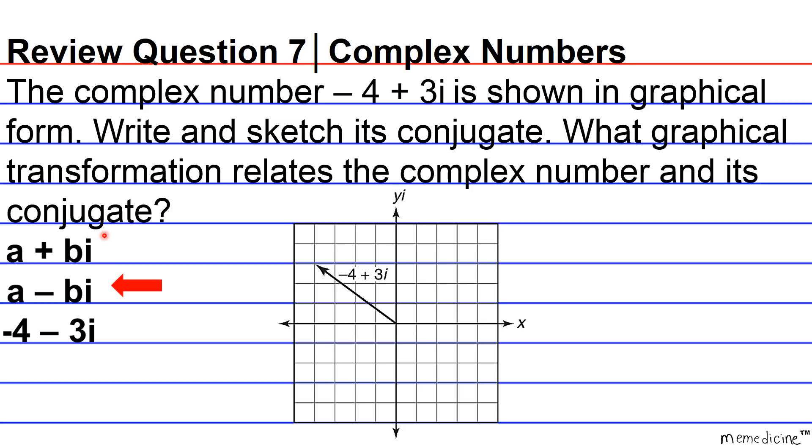All right, so the graph of its conjugate is going to be negative 4, 1, 2, 3, 4 minus 3i. So we have 1i down, 2i down, 3i down, so the graph should stop here.